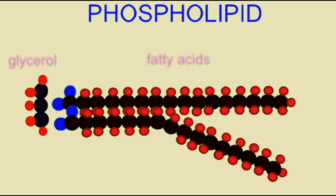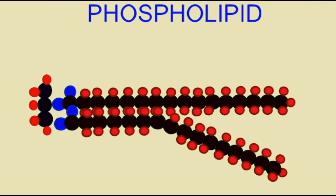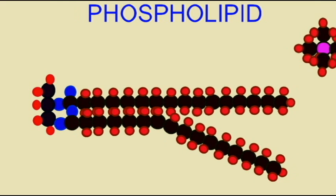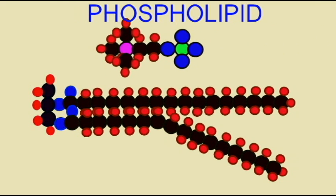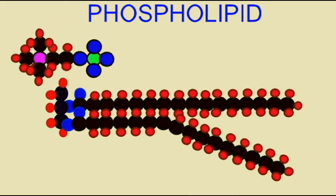The third carbon in the glycerol molecule binds to an area which is charged and includes a phosphate group. The phosphate atom is here depicted in green.